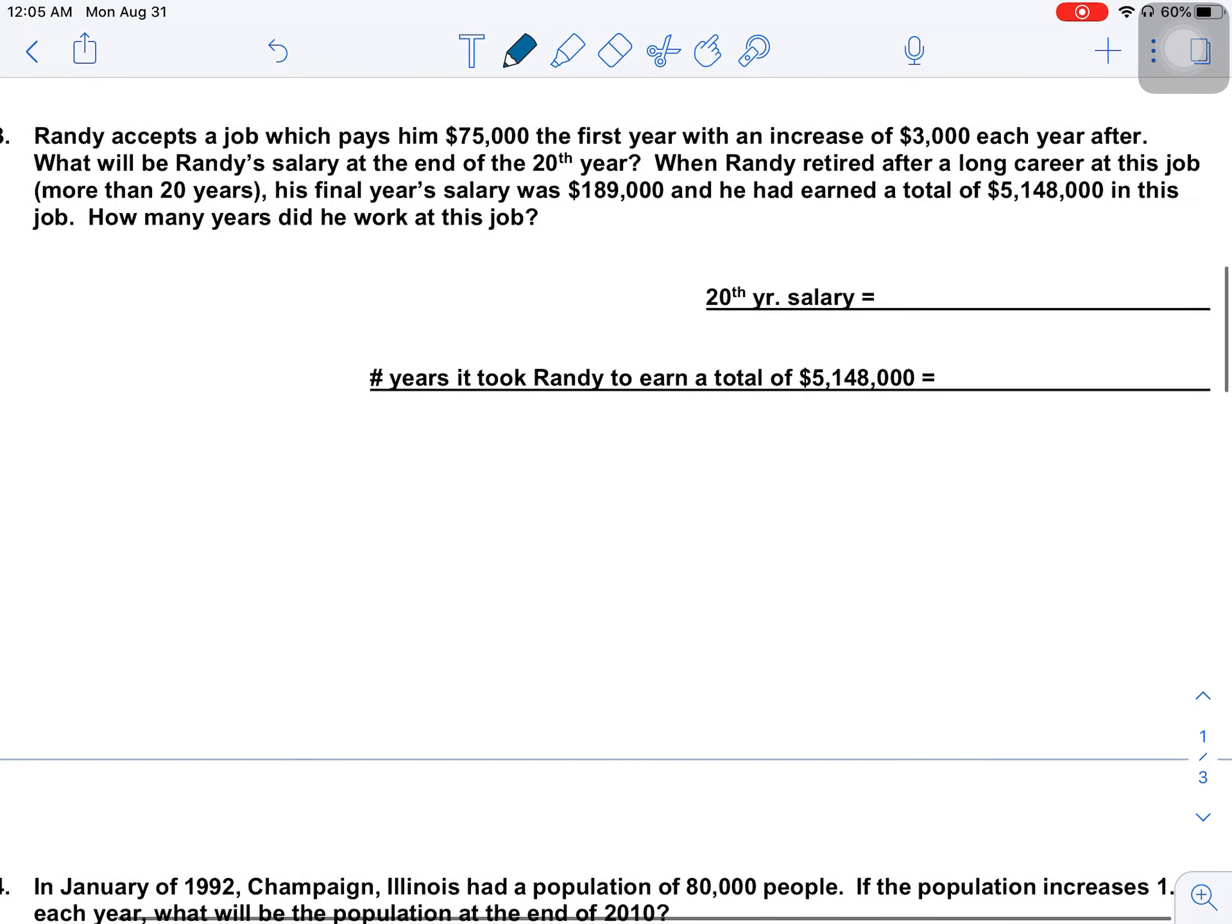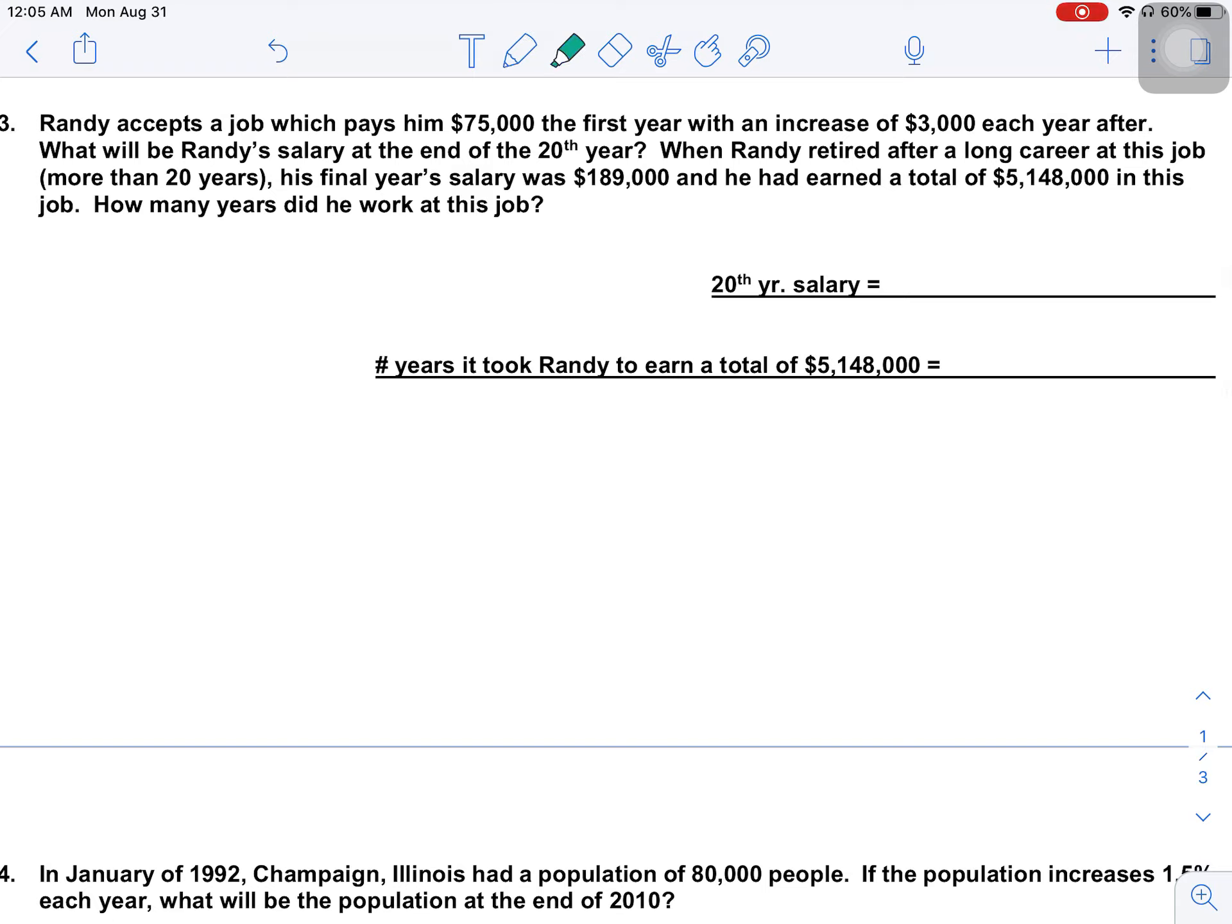Last question for this video, which is question number three here. Again, any time you see a word problem, annotate it, mark it up, make it be yours so you understand the information. Randy accepts a job which pays him $75,000 the first year with an increase of $3,000 each year after. Randy's salary will be at the end of 20 years. So I'm going to stop right there and figure out that part of it. So I know U sub 1 is equal to $75,000. I know we have a common difference of $3,000. And I know I have an N value here of 20. So he works at the same place for 20 years.